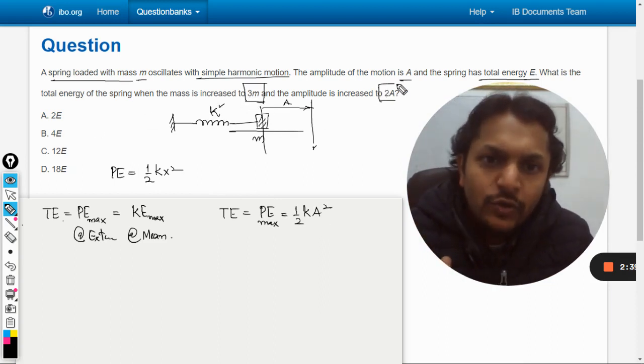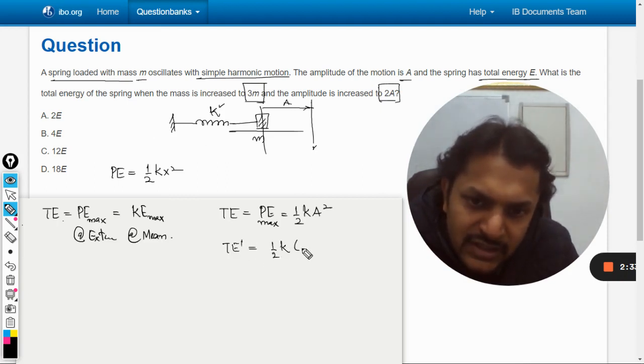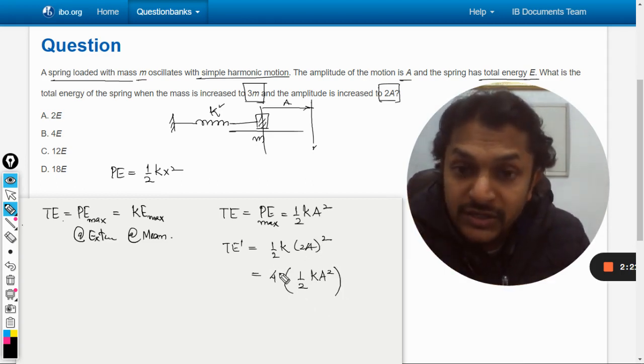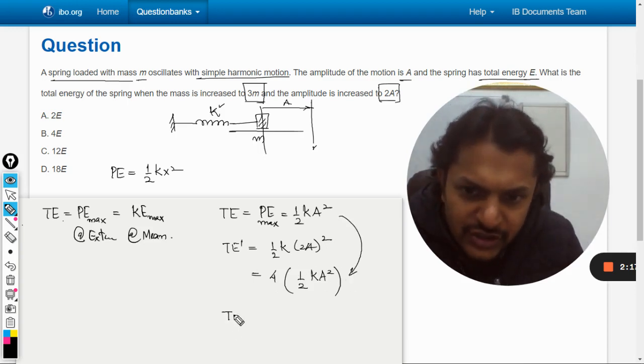So what is the total energy now in the second case? We have taken 2 common, it will become (1/2)kA². I have just separated this 2, 2² becomes 4, and this thing I just substituted here.